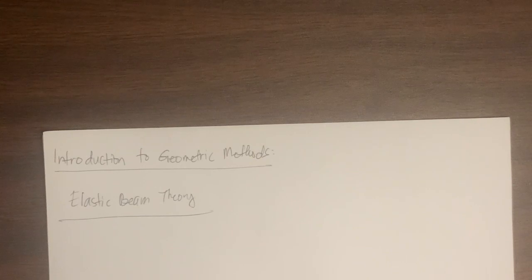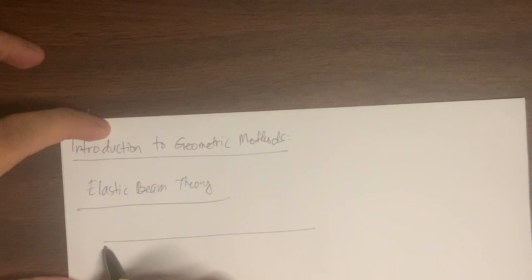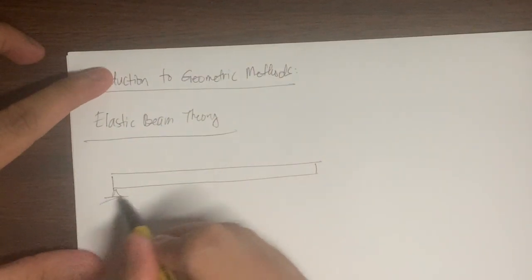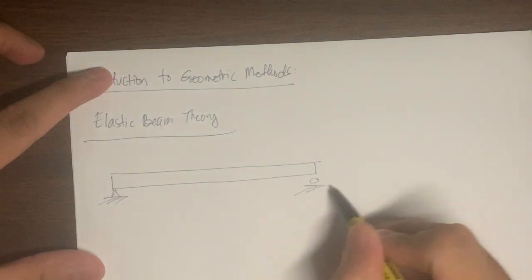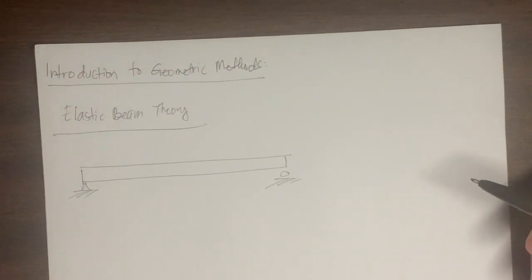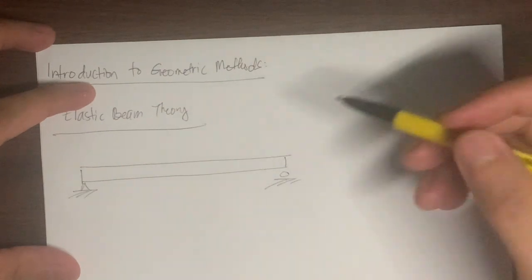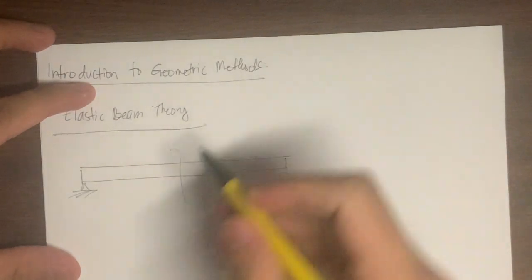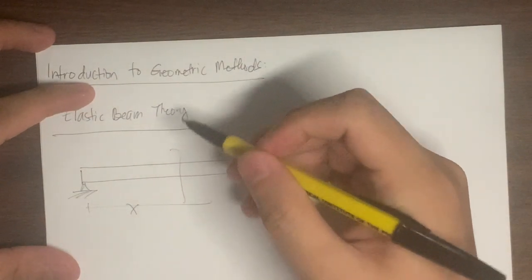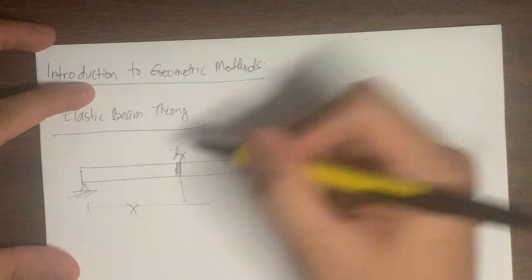So what is the elastic beam theory? For example, we have a simply supported beam. Let's say I will cut a differential strip at some point — let's say this is distance x. At that distance x, we will take a differential strip dx.